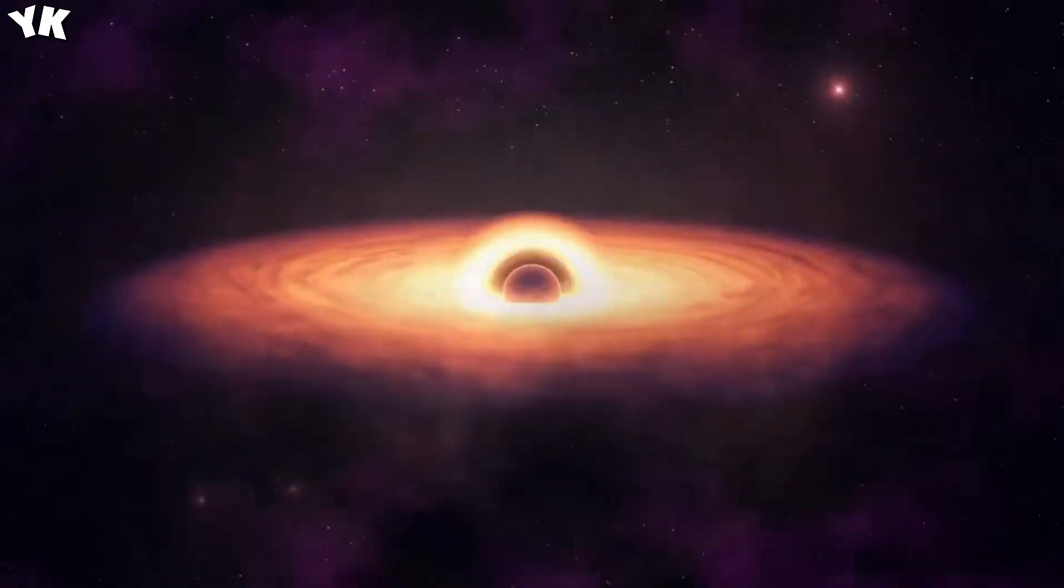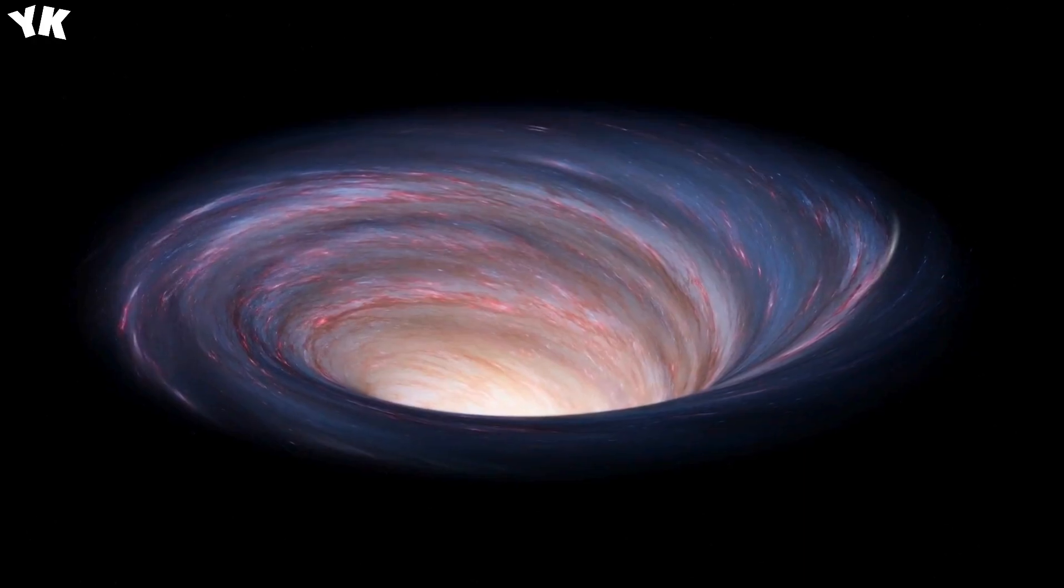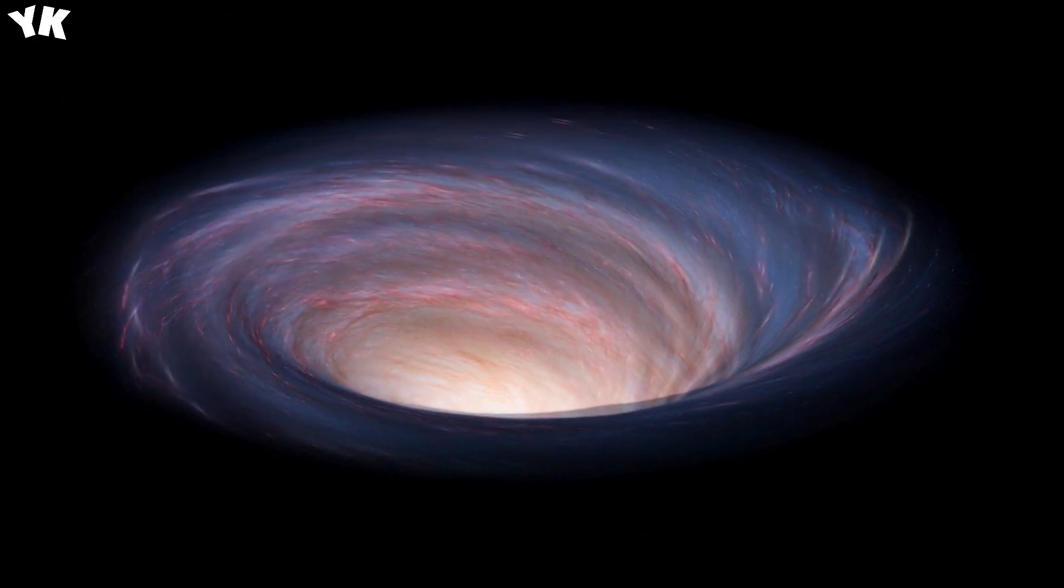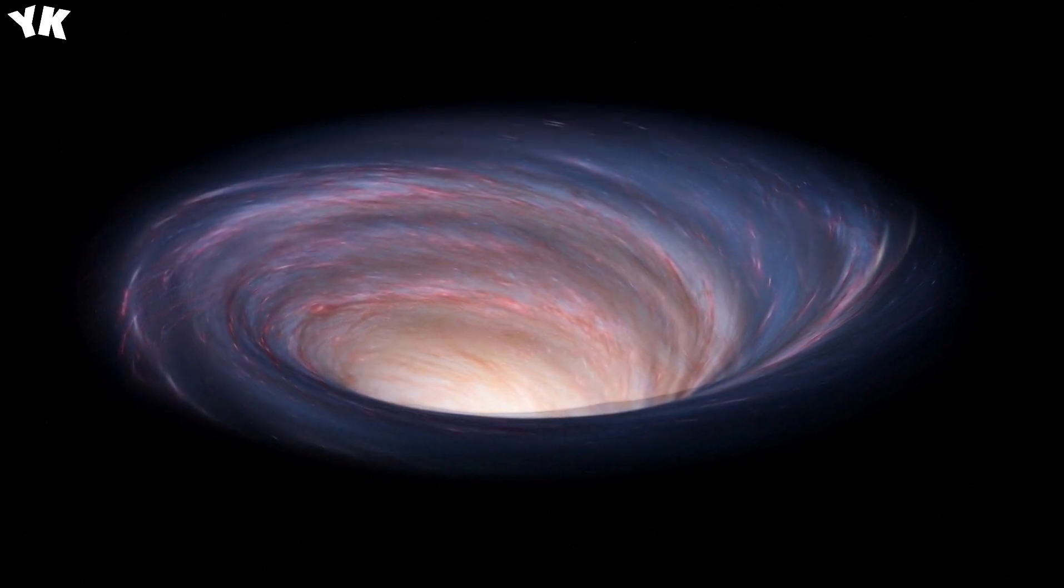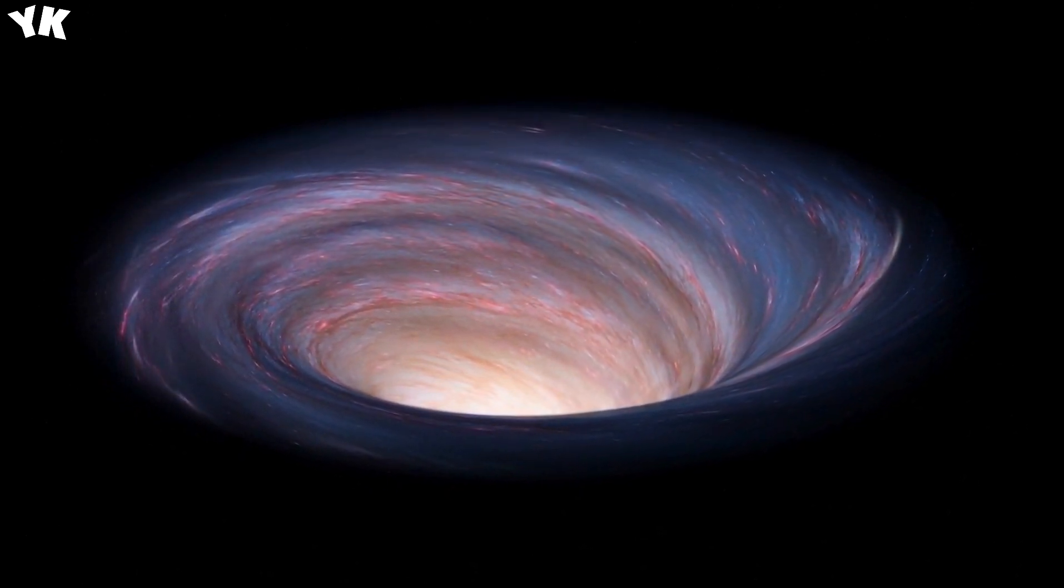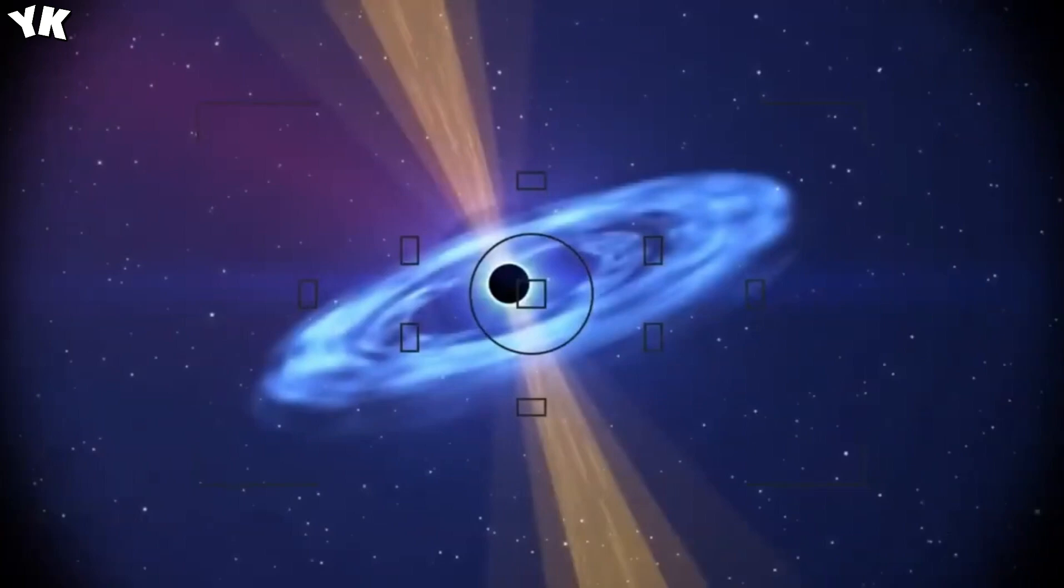Cygnus X-1, located approximately 6,000 light-years from Earth, boasts staggering properties. It is incredibly dense and exerts a gravitational force so potent that not even light can escape its clutches. This defining feature earned it the moniker 'black hole,' encapsulating the essence of these mysterious entities.